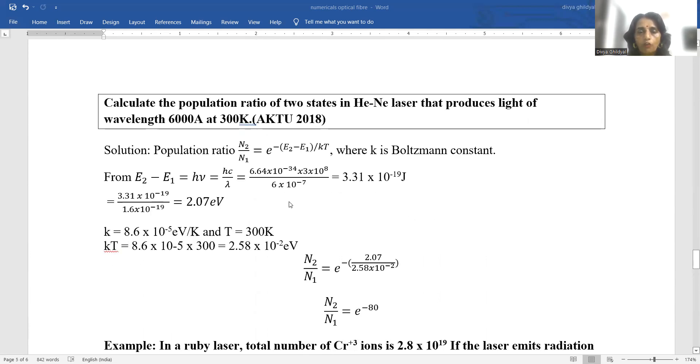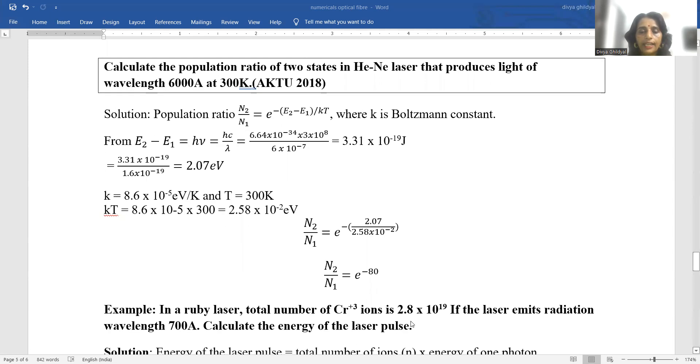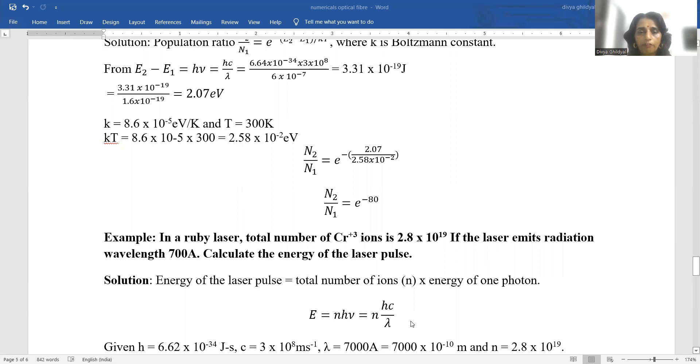Calculate the population ratio of two states in helium neon laser that produces light of wavelength 6000 angstrom at 300 Kelvin. Population ratio N2 upon N1 equals e to the power of minus E2 minus E1 upon kT, where k is Boltzmann constant. E2 minus E1 equals h mu equals hc by lambda equals 6.64 into 10 to the power minus 34 into 3 into 10 to the power 8 upon 6 into 10 to the power minus 7. This gives us the mathematical value in terms of electron volt. I divide it by 1.6 into 10 to the power minus 19. I put the value of k and I put the value of T and I get N2 upon N1 equal to e to the power minus 8T.